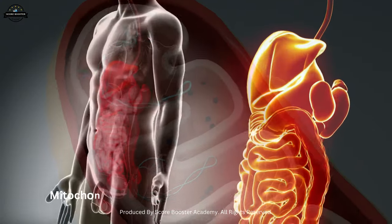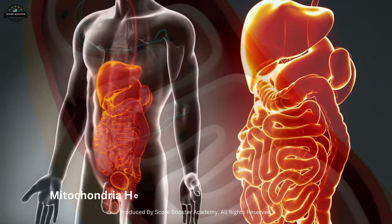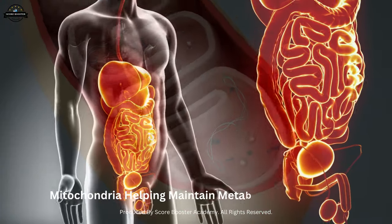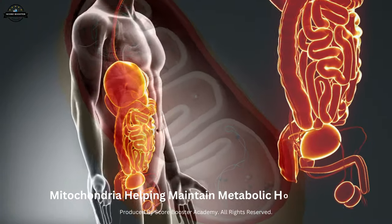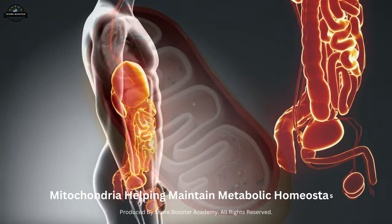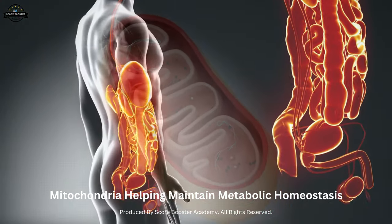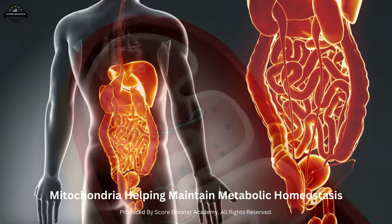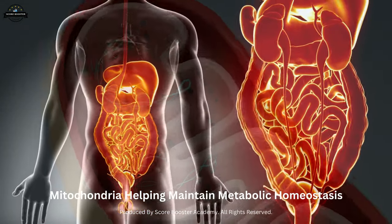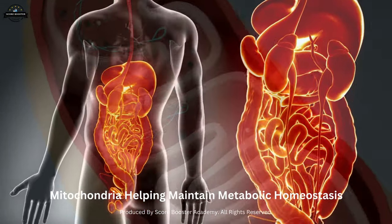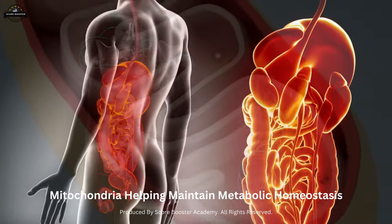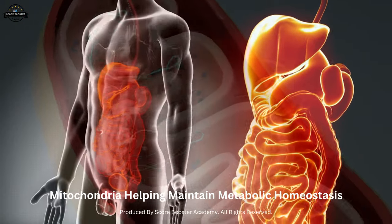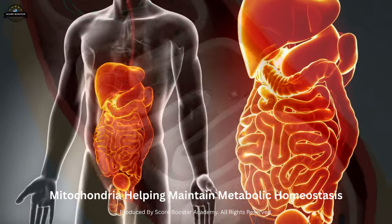Mitochondria help maintain metabolic homeostasis within the cell by coordinating energy production and nutrient utilization. They sense changes in nutrient availability and adjust their activity accordingly to ensure the cell's energy needs are met efficiently.